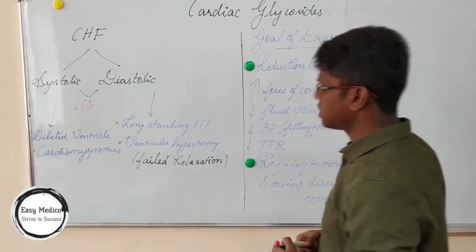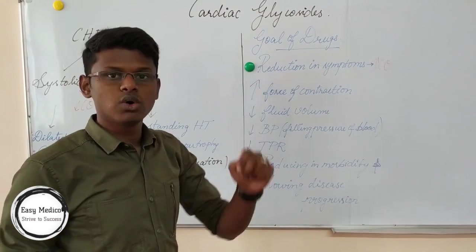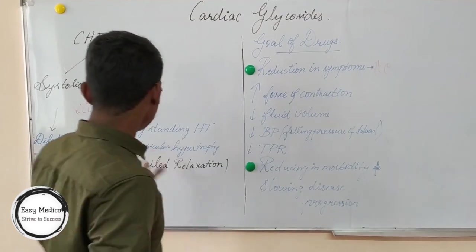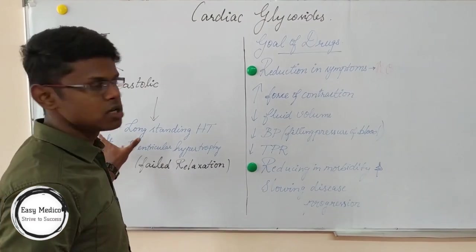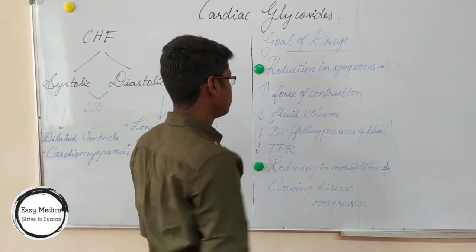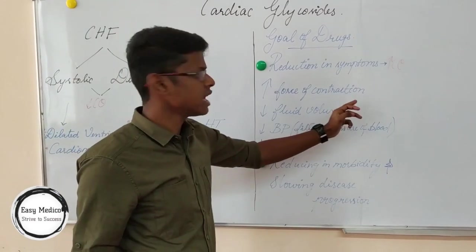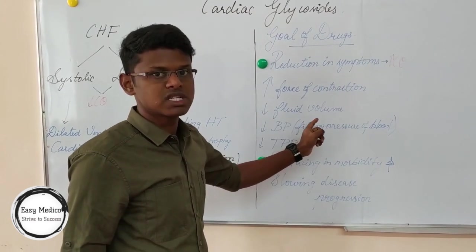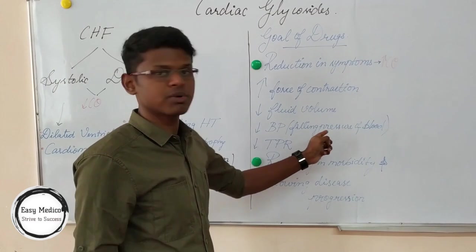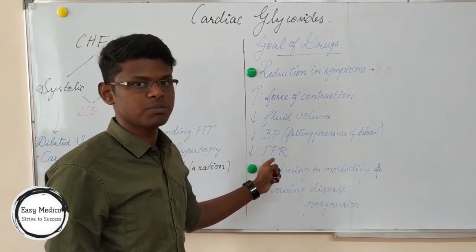Now we will discuss the goals of cardiac glycosides. There are two main goals. One is reduction in symptoms — to achieve this we should increase the force of contraction, decrease the fluid volume to reduce congestion, decrease the filling pressure of the blood, and decrease the total peripheral resistance.